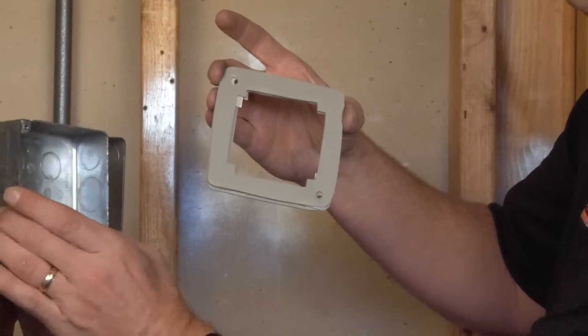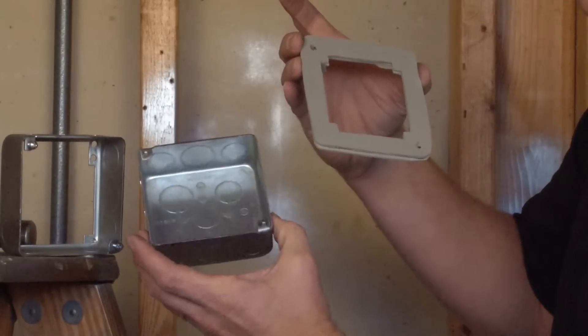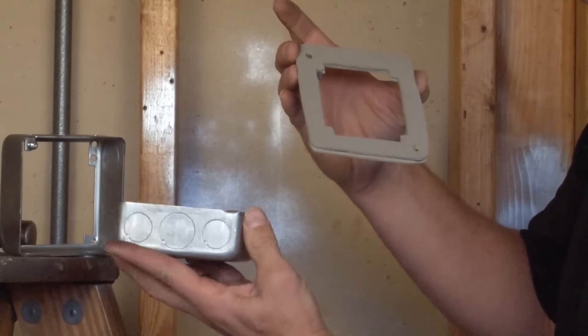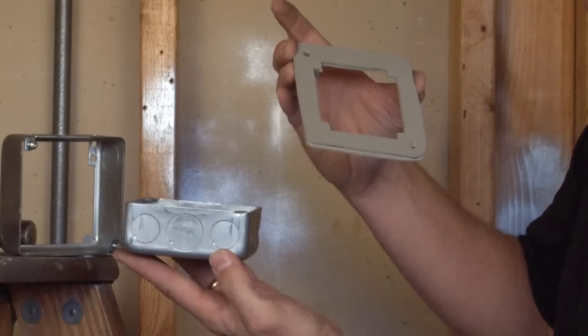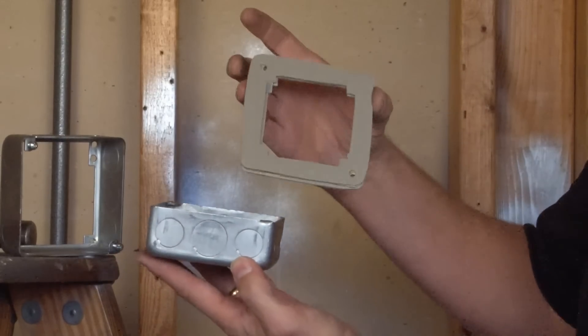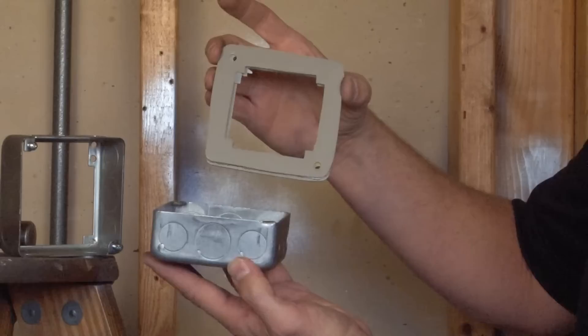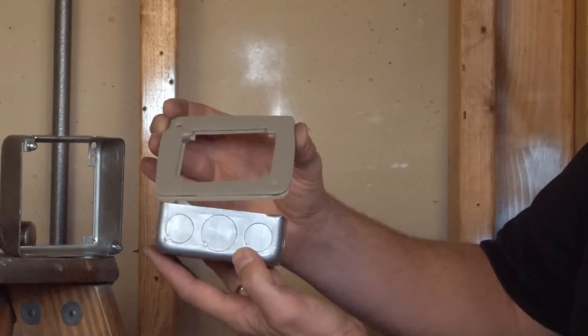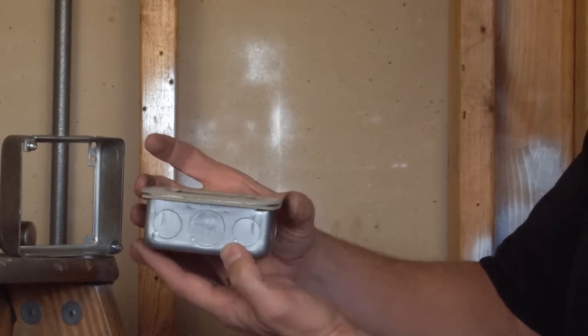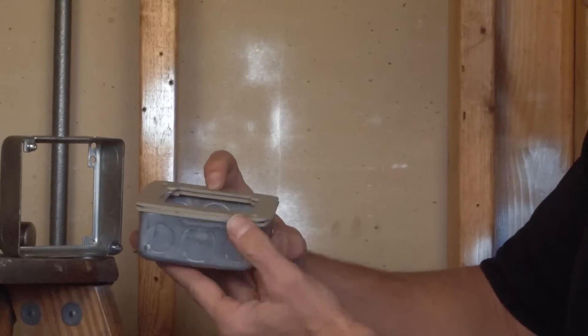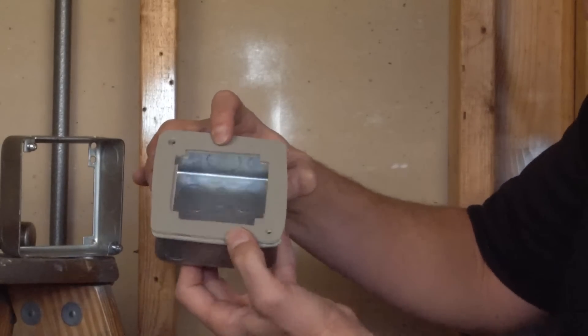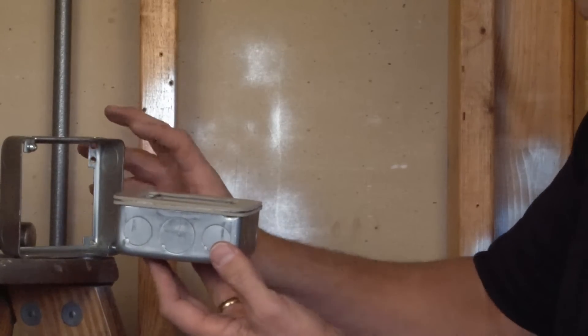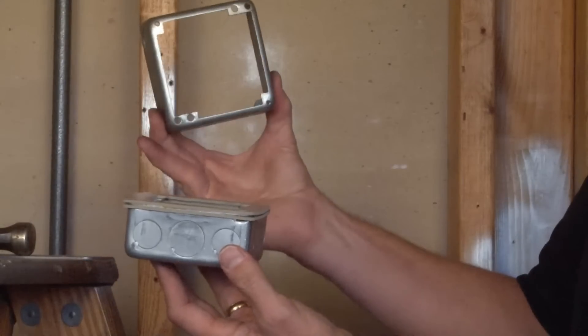Here we have a standard Chicago plenum box. If this were installed in the ceiling and the installer required additional wiring capacity, what the installer would do is add the double gasketed cover to the top of the box prior to installing the open-ended extension ring.